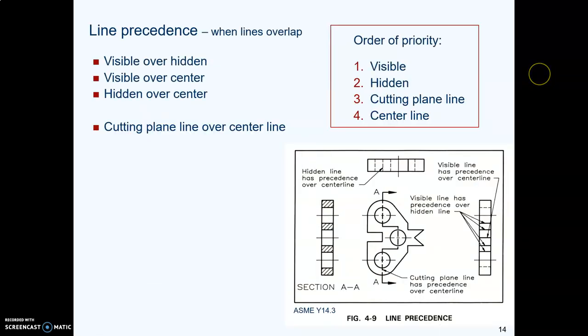One final fine point about line types. If you have a place in a drawing where you have more than one kind of line type over the top of another one, ASME gives us an order of precedence, an order of priority. This most often comes up when you're drawing section views and you have things like a cutting plane arrow, cutting plane line.